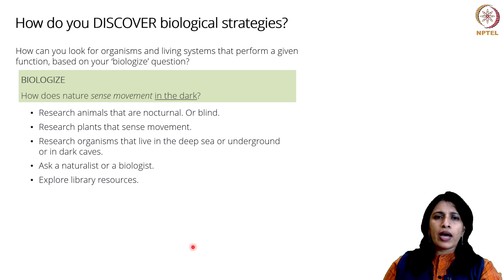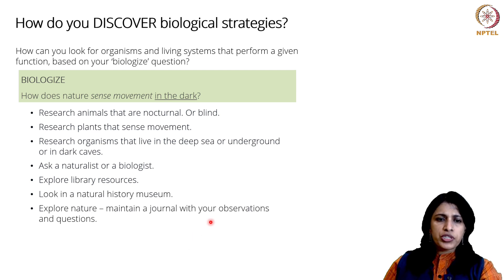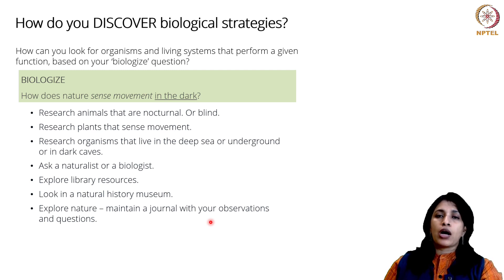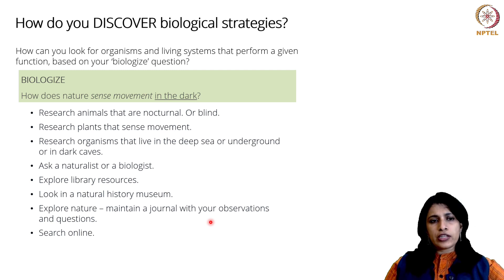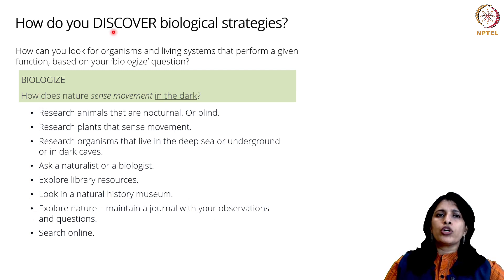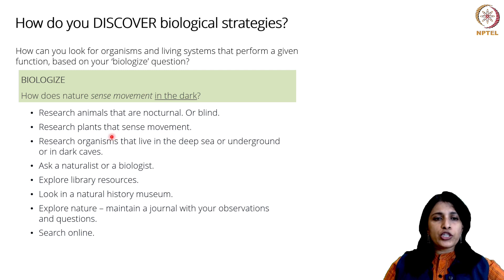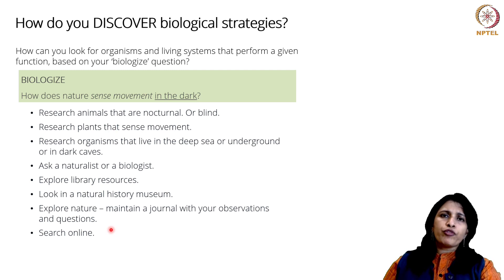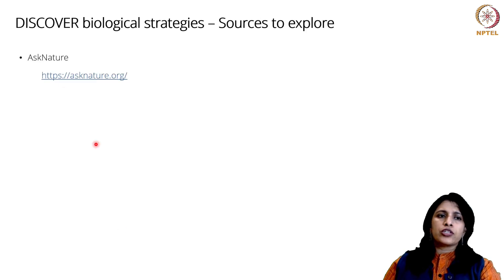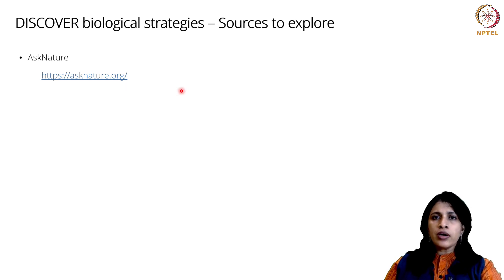You could explore library resources, look in a natural history museum, or go out in nature — remember, this is biomimicry, so going out in nature is something you will be expected to do. You can also search online. However, for the purposes of this course, we are suggesting that you use Ask Nature, which is the most direct way of looking for organisms and their associated strategies.